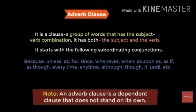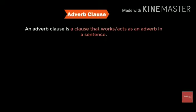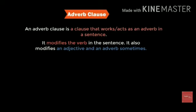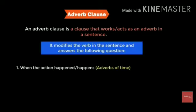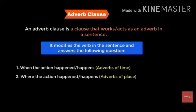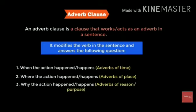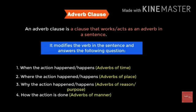An adverb clause is always a dependent clause — a subordinate clause — because it cannot stand on its own and cannot convey a proper meaning. It has to be dependent on the main clause. An adverb clause works or acts as an adverb in a sentence, and it can modify the verb and answer different kinds of questions — when, where, why, or how the action happened.